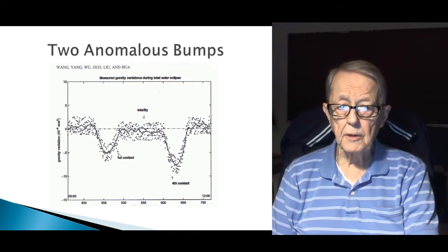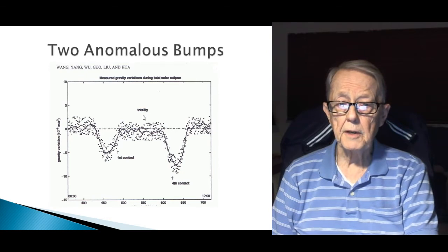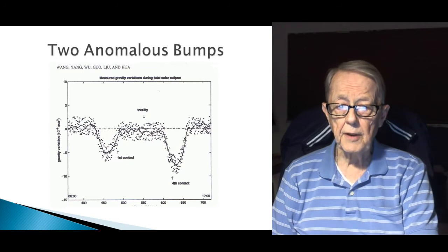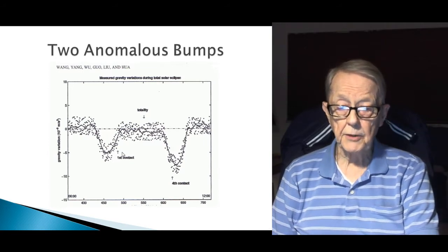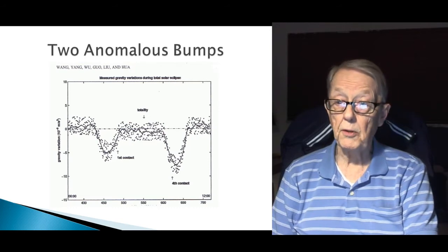He marked the first contact. He calls it, instead of the start, it's the first contact. Here's totality. And right here is the final contact. What's interesting is that most of this bump occurs before the eclipse.